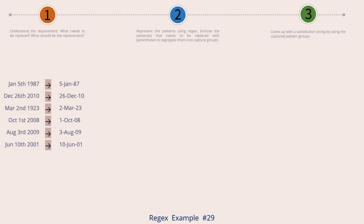The input date strings follow a format: a three-letter representation of the month, followed by a date number, followed by a suffix like th, nd, st, etc., followed by a four-digit year. The replacement string shows the same date but in a different format — date number followed by a hyphen, followed by a three-letter month, followed by a hyphen, followed by a two-digit year. Note that the year is two digits and not four digits in the transformed string. So almost all of the information from the input string needs to get captured and reused in the transformed string. Let's move to step two now.